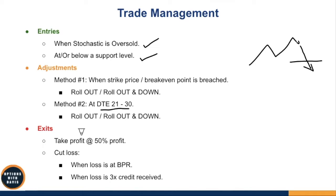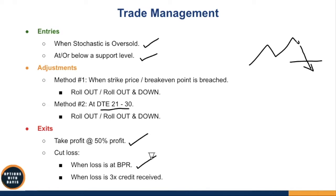For exits, take profit at around 50% of the premium received. For cutting loss, there are two approaches: cut loss when it hits your buying power reduction — my preferred approach — or when the loss is about three times the credit received.